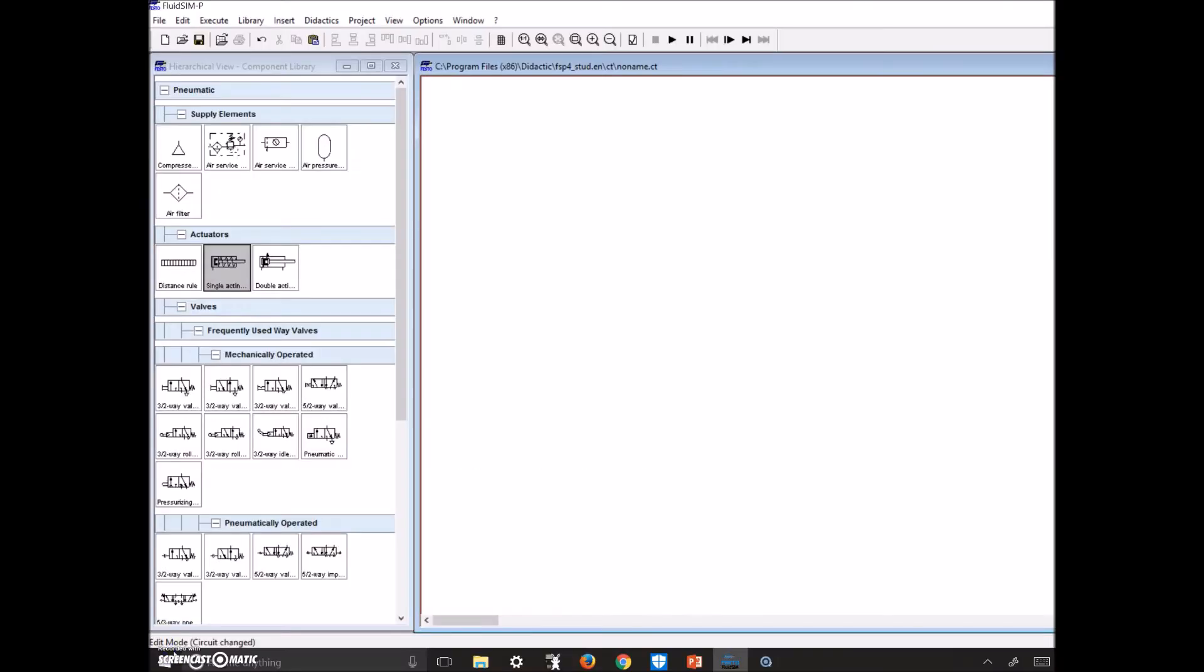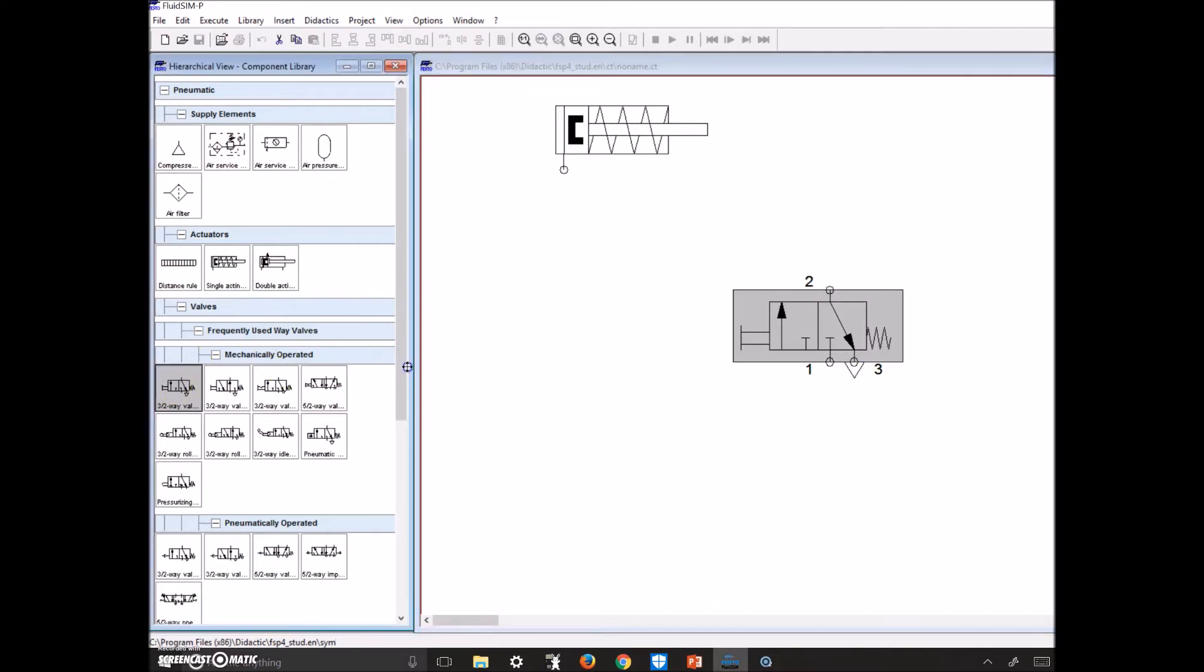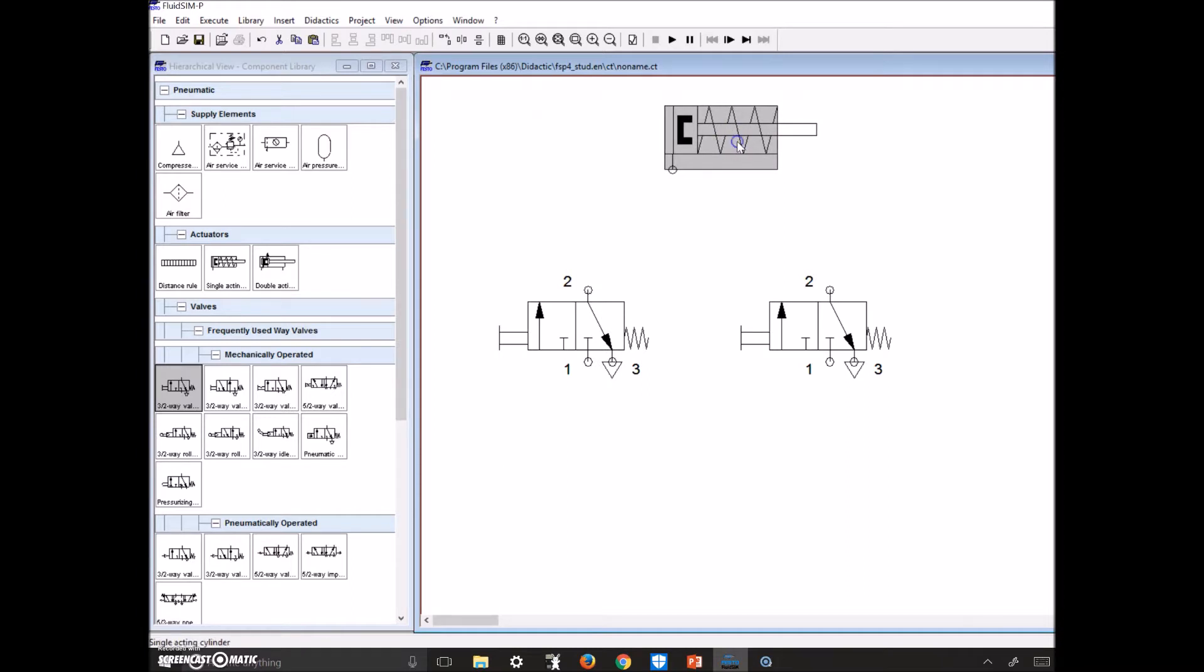All right, so we're over to our Festo FluidSim now. Let's grab that single acting cylinder and let's grab some 3/2 valves that are normally closed to the passage of air. All we have to do is just set these up to provide us with that OR logic, so one or the other one will provide that air up to the single acting cylinder. We need to supply here, so we'll drop this in.